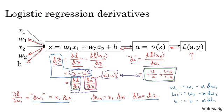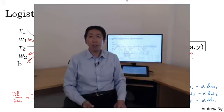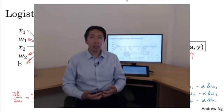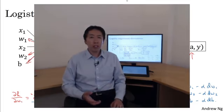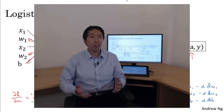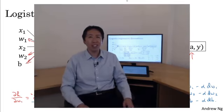This would be one step of gradient descent with respect to a single example. So you've seen how to compute derivatives and implement gradient descent for logistic regression with respect to a single training example. But to train your logistic regression model, you have not just one training example—you have an entire training set of m training examples. In the next video, let's see how you can take these ideas and apply them to learning from an entire training set.